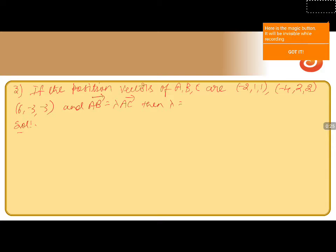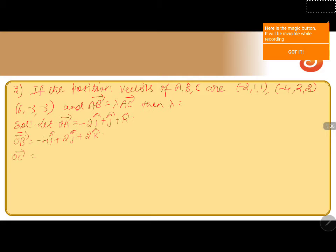Let OA vector equal minus 2 i-cap plus j-cap plus k-cap. Similarly, OB vector is given by minus 4 i-cap plus 2 j-cap plus 2 k-cap, while OC vector is given by 6 i-cap minus 3 j-cap minus 3 k-cap.